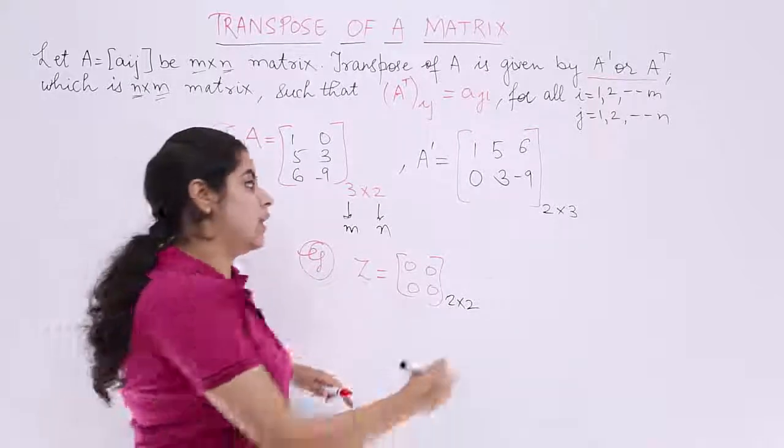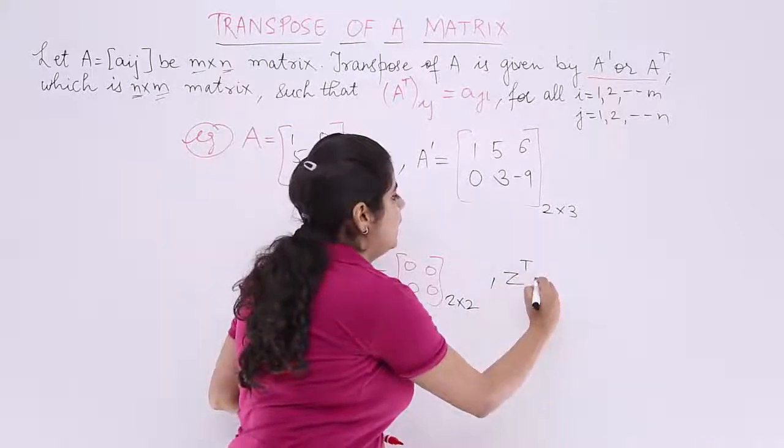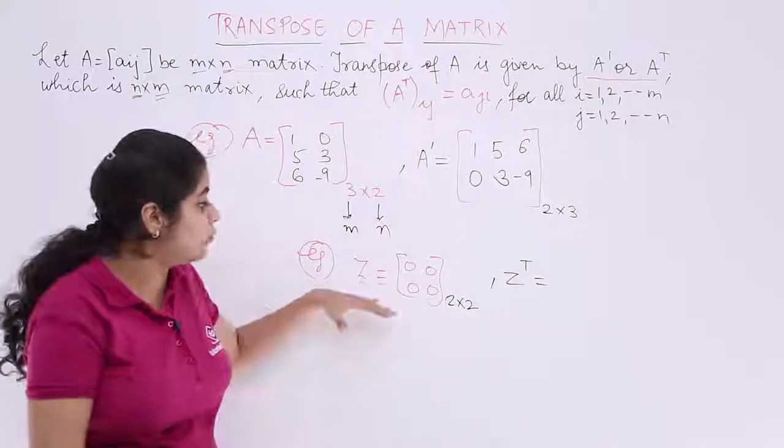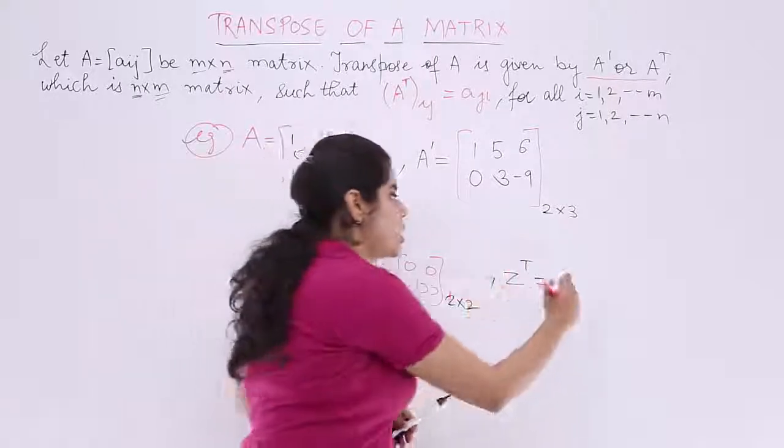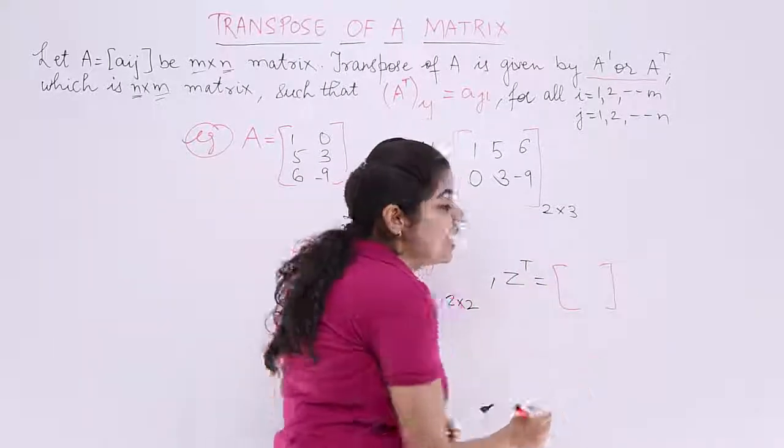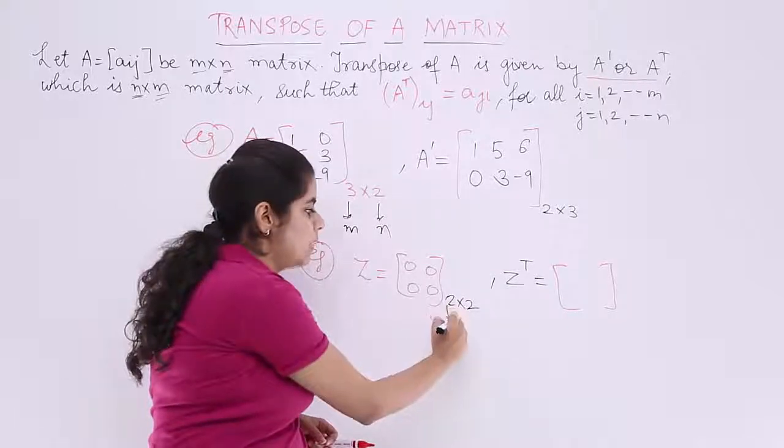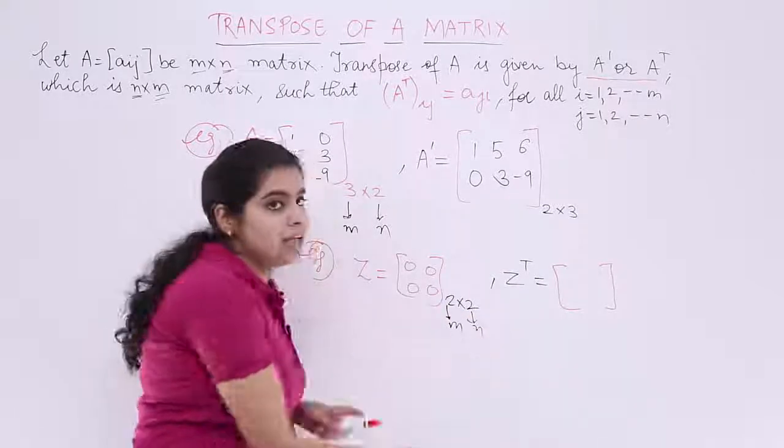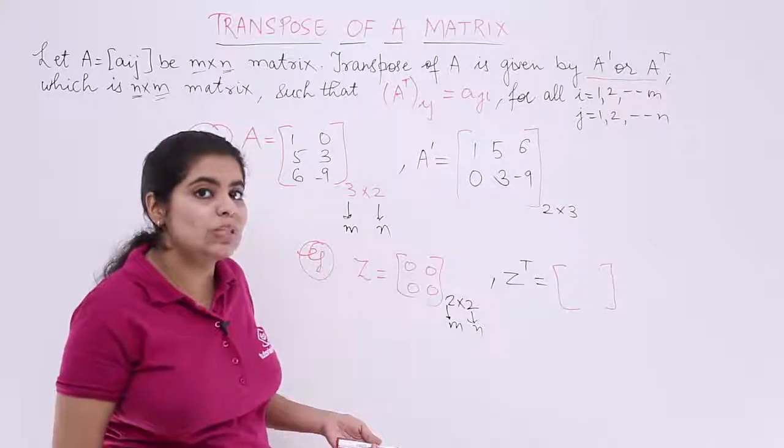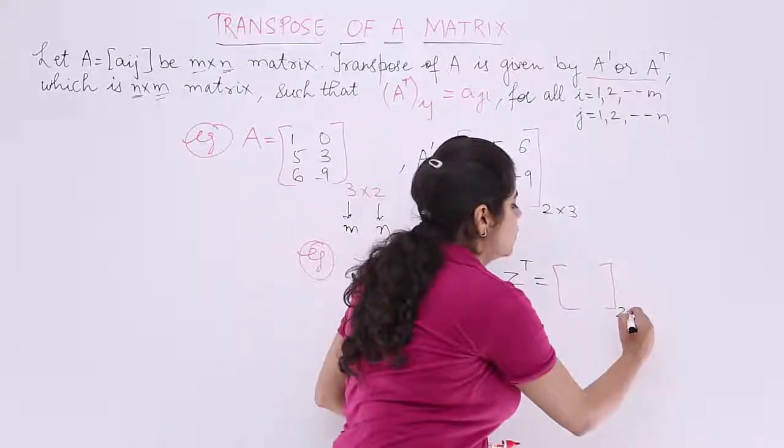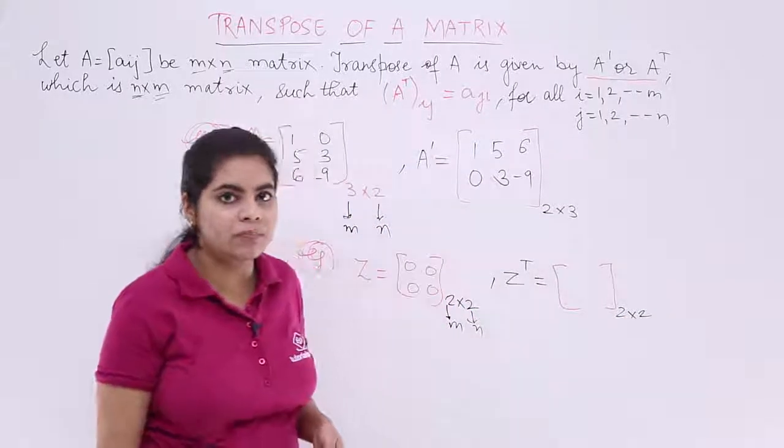If I am supposed to find out Z raised to the power T, that means I am supposed to find out Z transpose. Now what is Z transpose? It is again, if it is m, this is your n, interchange them. Then since 2 is equal to 2, even after interchanging, you get 2 by 2. This you already know.